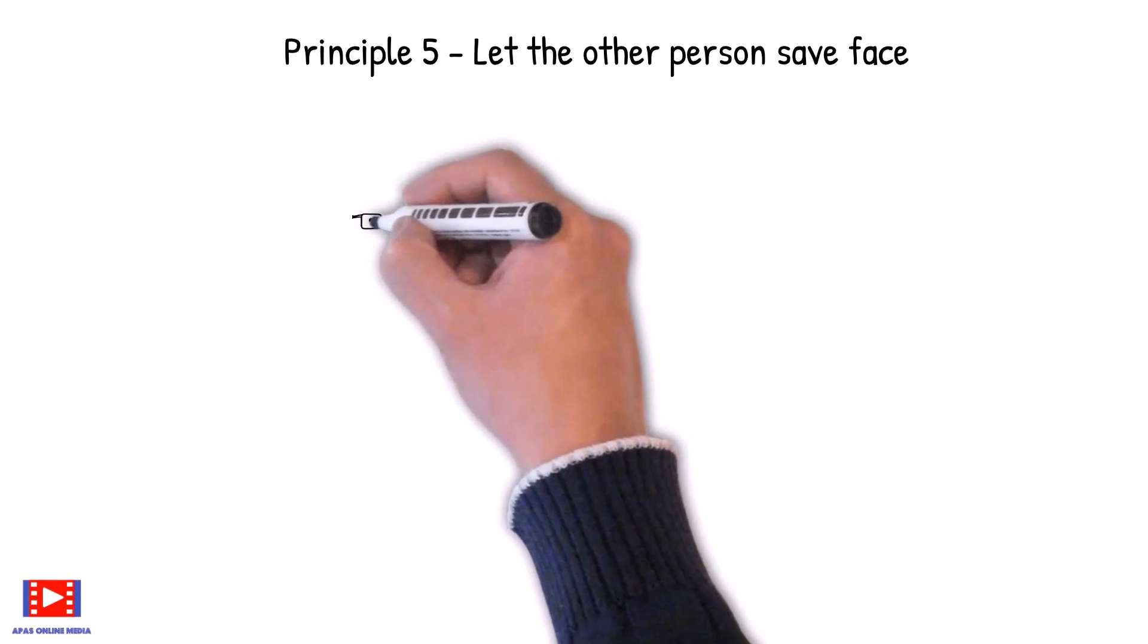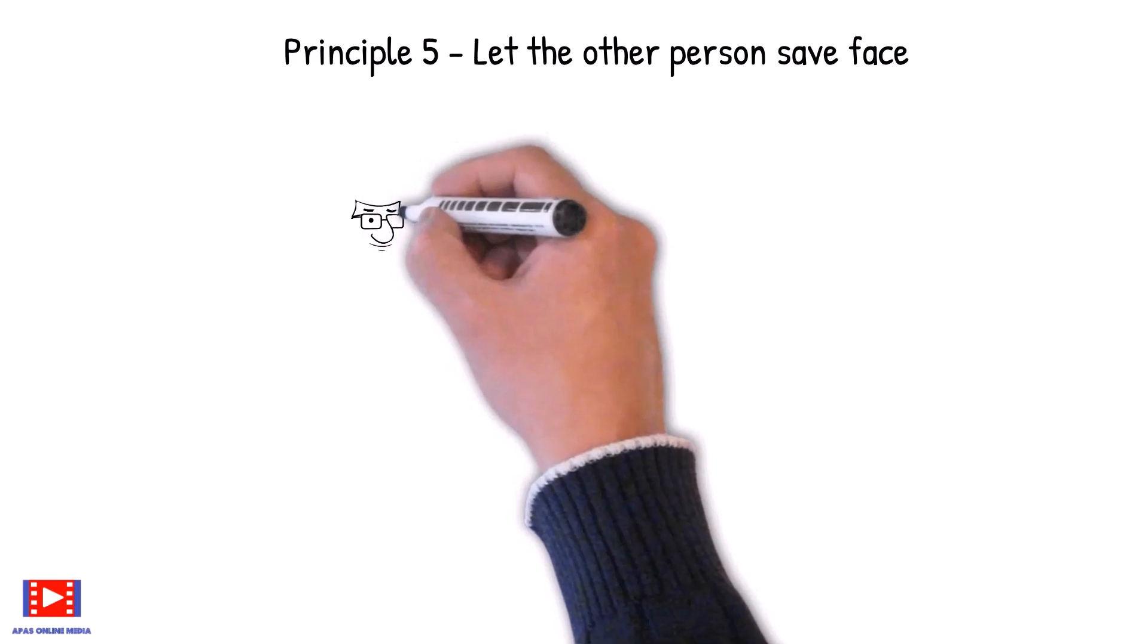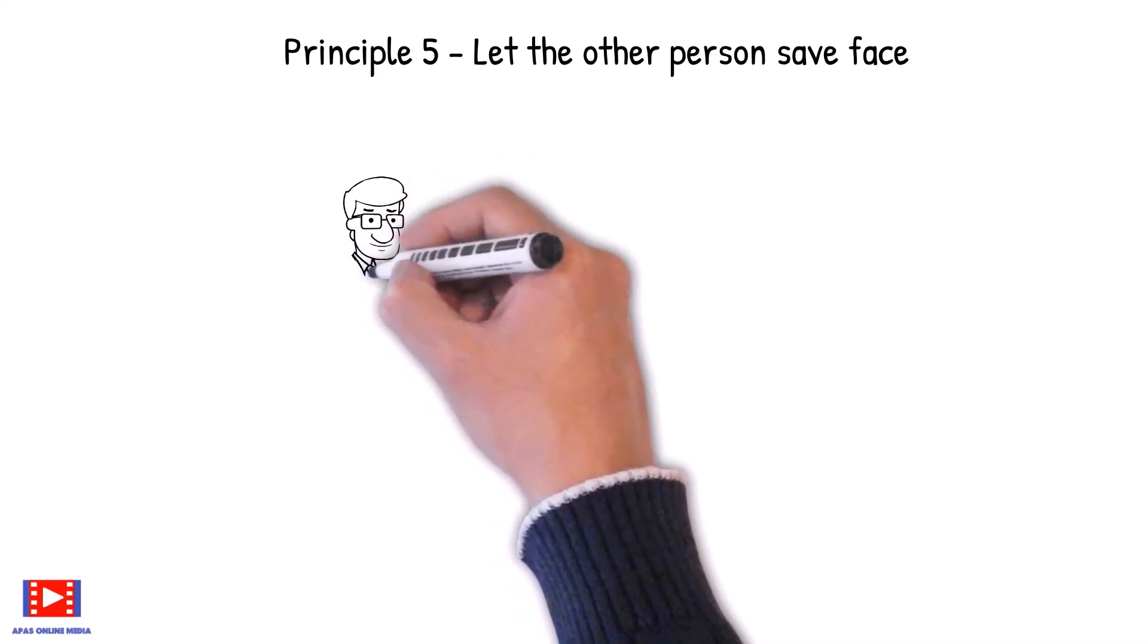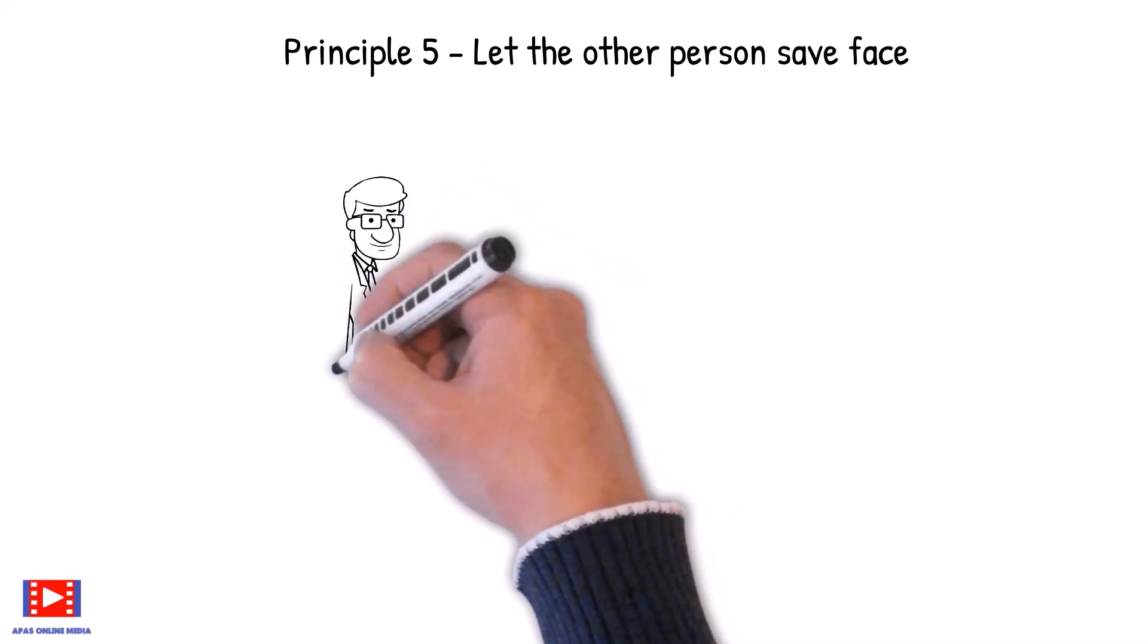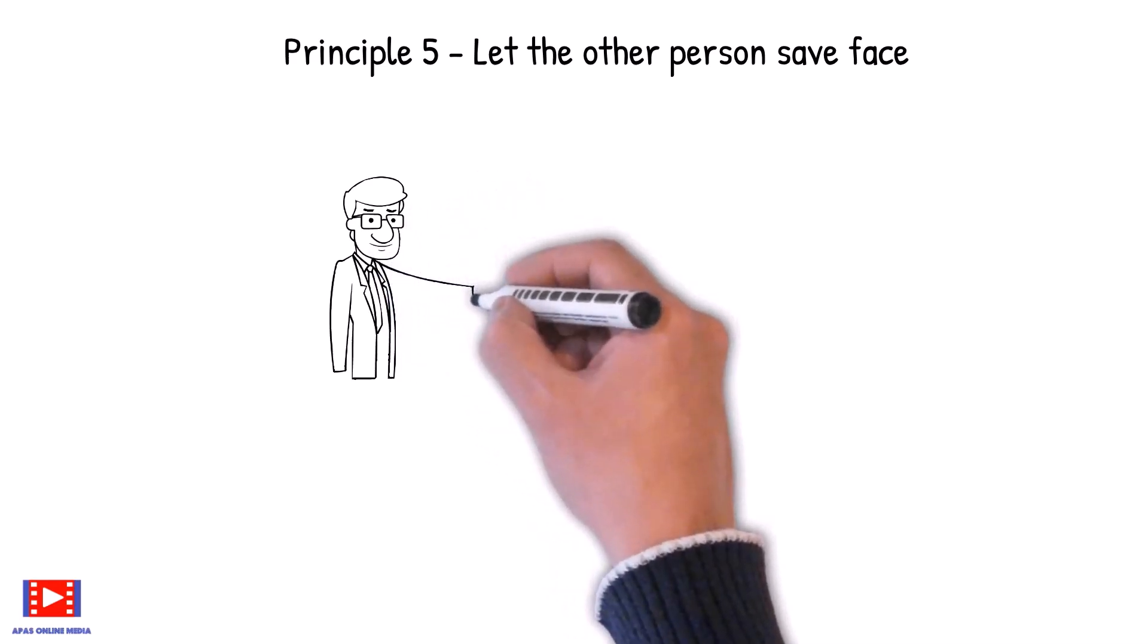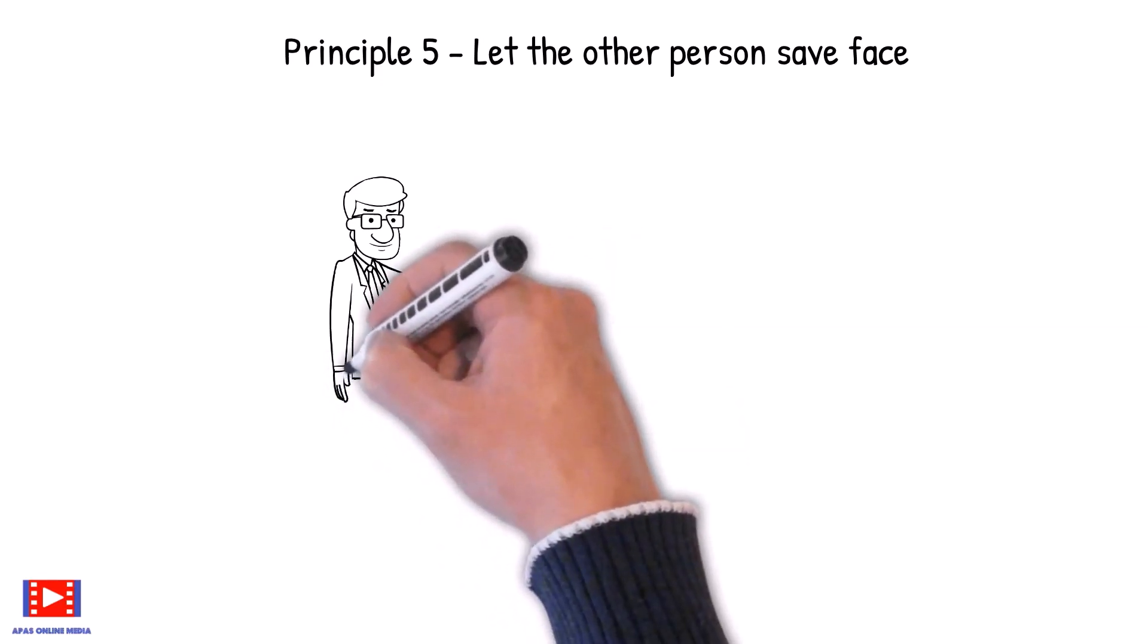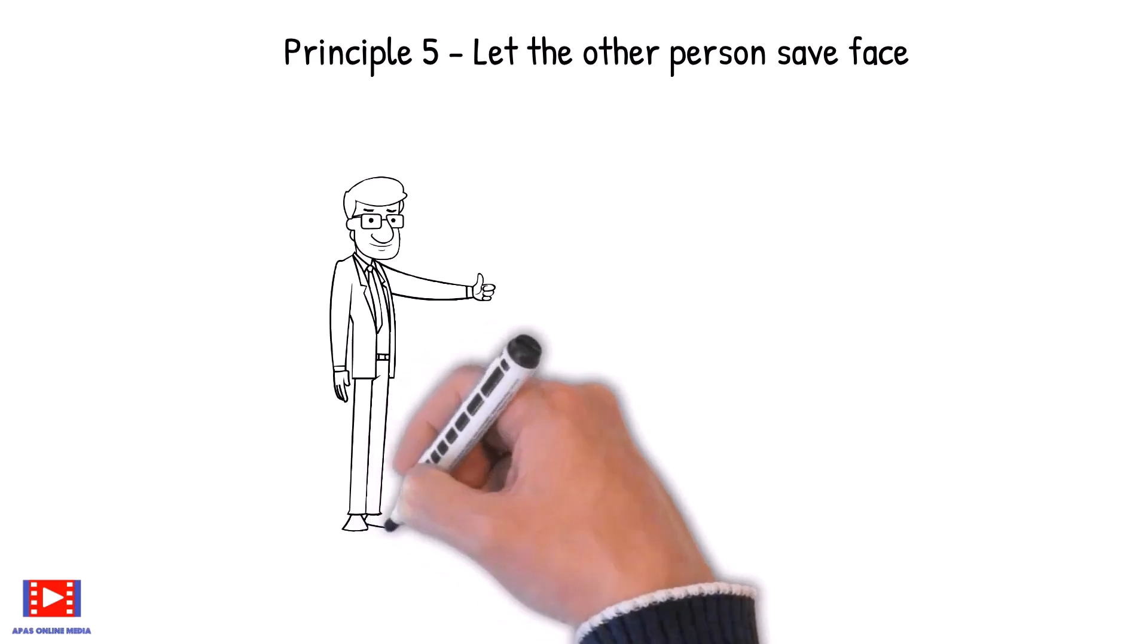Principle 5: Let the other person save face. Letting one save face - how important, how vitally important that is, and how few of us ever stop to think of it. We ride roughshod over the feelings of others, getting our own way, finding fault, issuing threats, criticizing a child or an employee in front of others without even considering the hurt to the other person's pride.